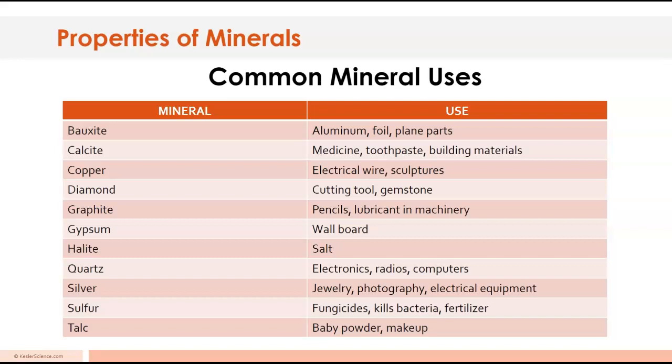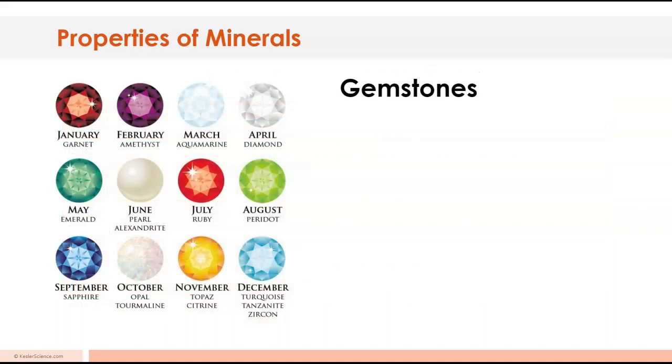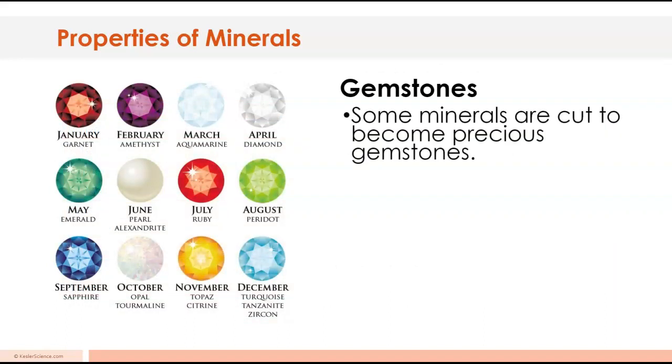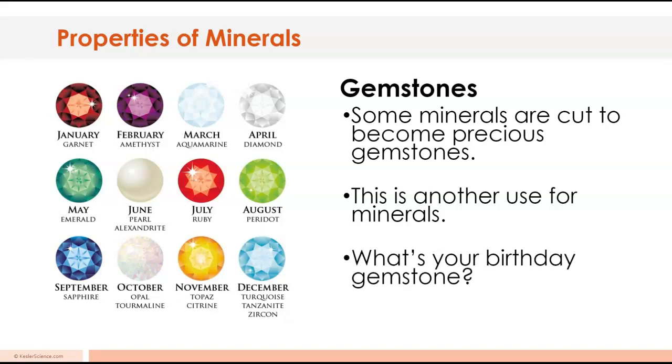Halite is salt. Quartz is in a lot of electronics. Silver's in jewelry, it's used in photography and electrical equipment. Sulfur kills bacteria and fungus and it's also used as a fertilizer. Talc is found in baby powder and makeup. These minerals are all around us. Gemstones can be shined up and cut and used in jewelry all over the world. A fun one is your birthstone. For me, my birthday's in January and so garnet is my birthstone. What's your birthday gemstone?